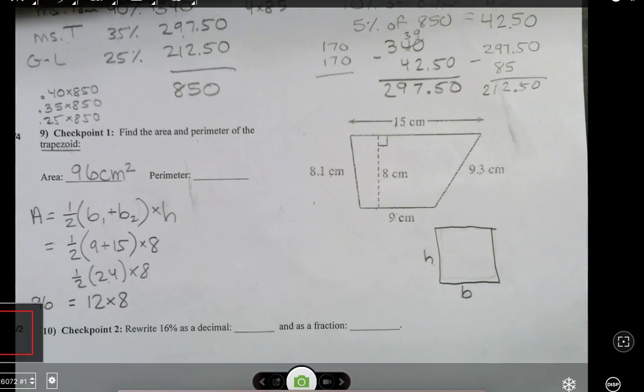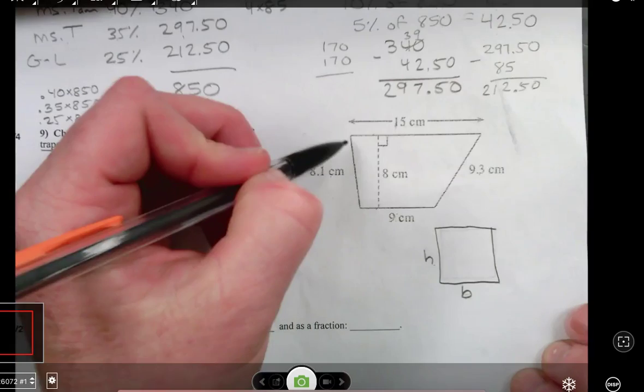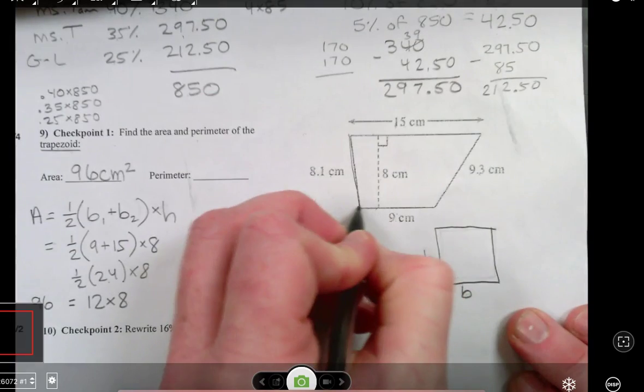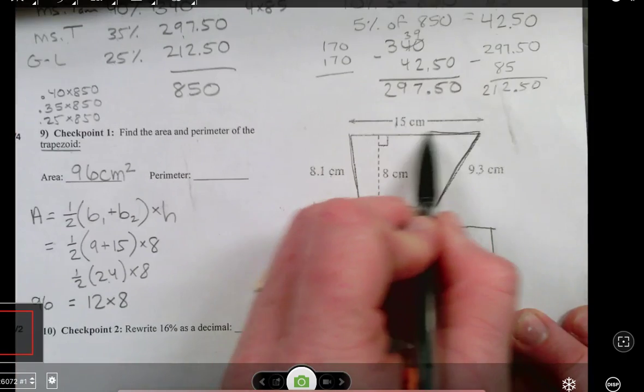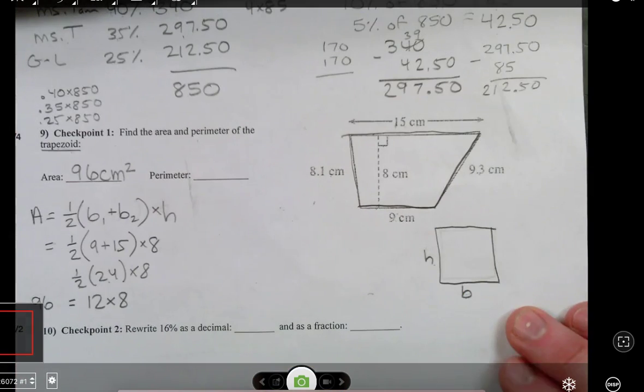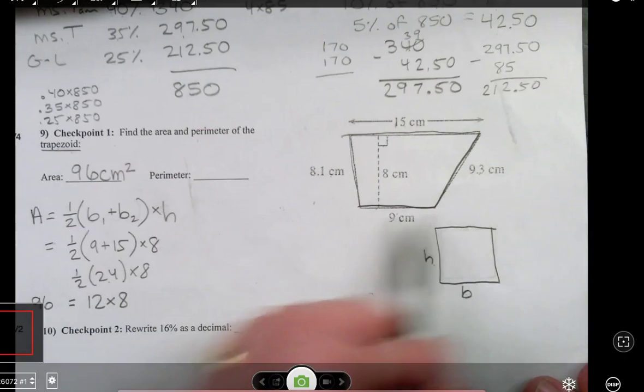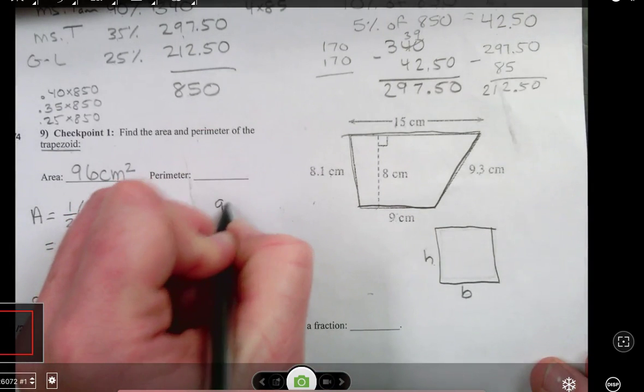The perimeter is just all the way along the outside of the trapezoid. It is not including the height. All right, so we just have to add these numbers up.